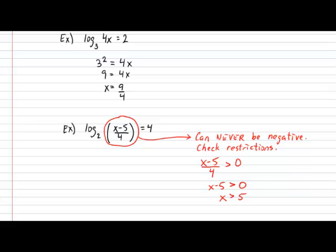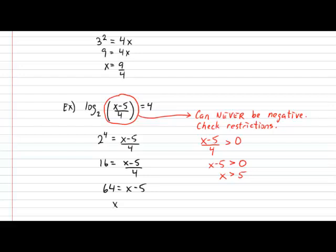Now that we've gotten the restrictions out of the way, let's go back to solving the actual equation. Going back to the definition of our log, 2 exponent 4 should be equal to the object that we were logging, which is x minus 5 all over 4. Simplifying, we get that 16 is equal to x minus 5 all over 4. Continuing, we get that 64 is equal to x minus 5, and therefore x is equal to 69.